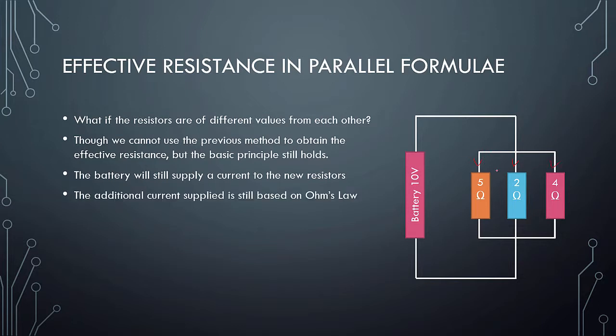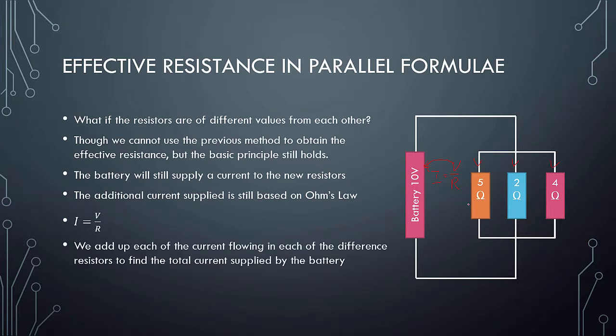It will supply each of the resistors a certain amount of current, and it will still be based on Ohm's law, where I equals V over R. And we add up all the current in each of the different resistances to find the total current supplied by the battery.